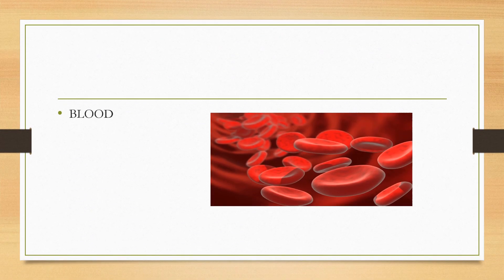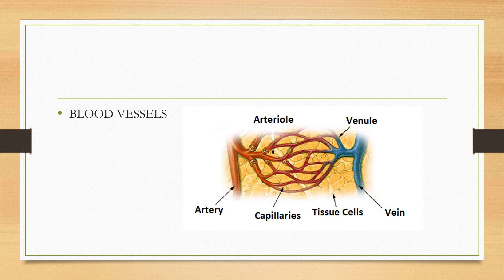The second part is blood. Blood is a body fluid in humans and other animals that delivers necessary substances such as nutrients and oxygen to the cells and transports metabolic waste products away from those same cells. In vertebrates, it is composed of blood cells suspended in blood plasma.